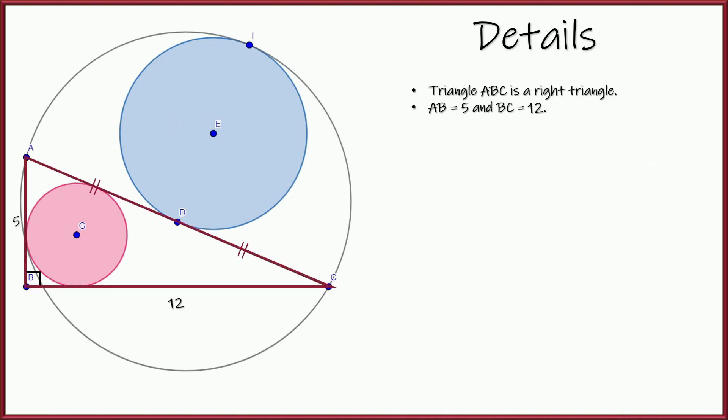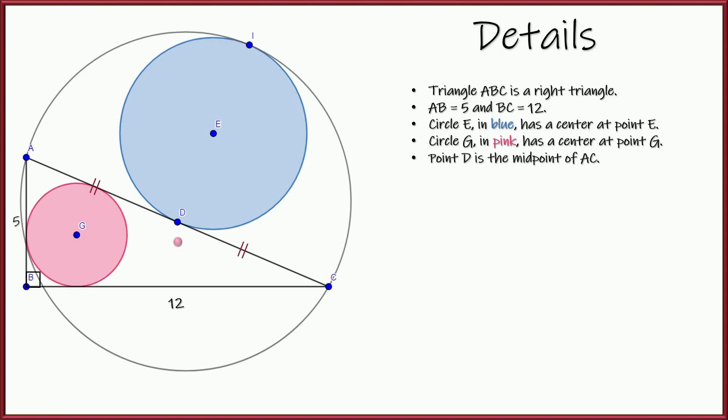We've got a triangle ABC. It's a right triangle with side lengths 5 and 12. We've got a circle that's in blue. Its center is point E. We've got another circle in pink. Its center is point G. D is the midpoint of the hypotenuse AC. And points A, C, D, and I are all points of tangency. So those are the facts that we're given.